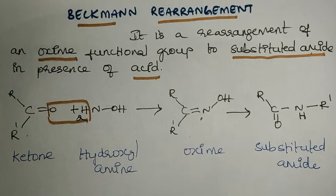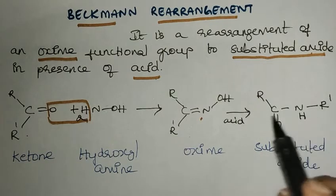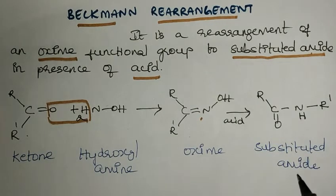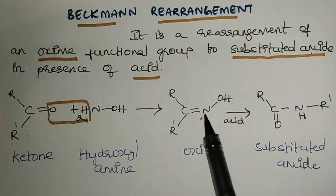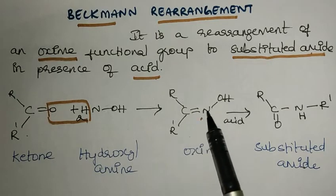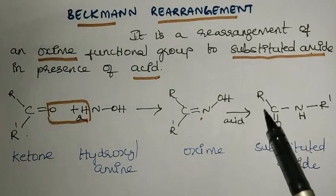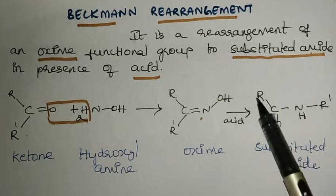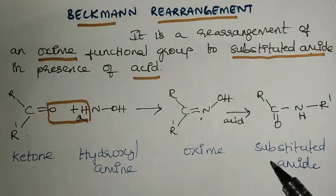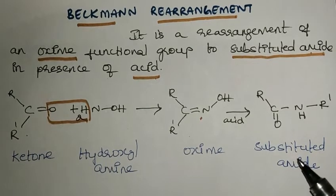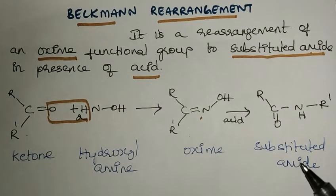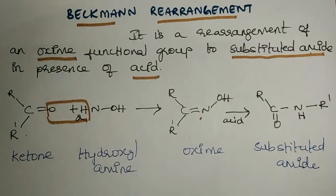This oxime will undergo rearrangement in the presence of acid to give a substituted amide. The oxime functional group C double bond N-OH is converted to amide, substituted with R groups or aryl groups. Even cyclic oximes will undergo this rearrangement. This is the Beckman rearrangement.